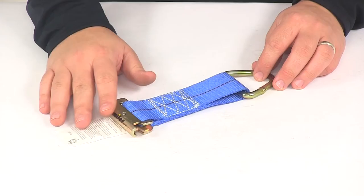That's going to do it for today's look at the Ericsson E-Track tie-off with D-ring.